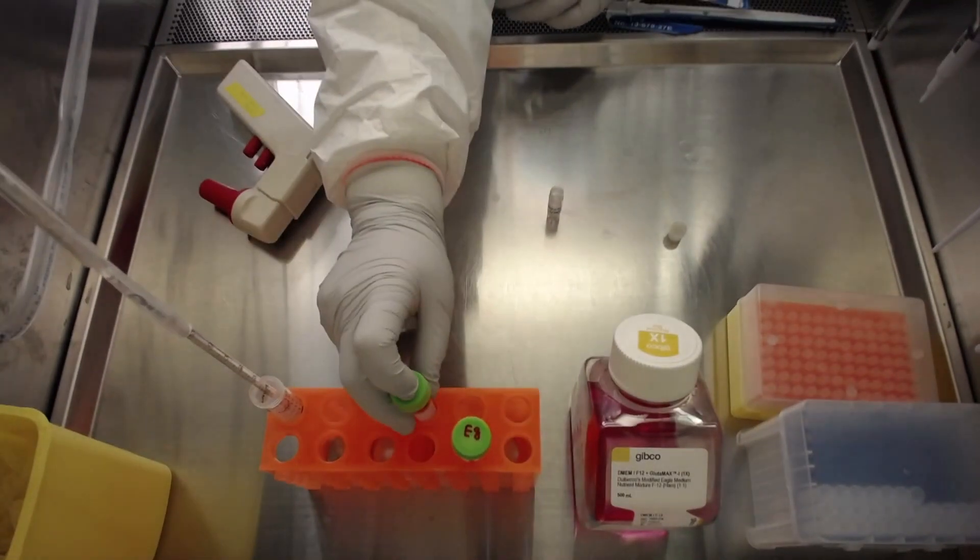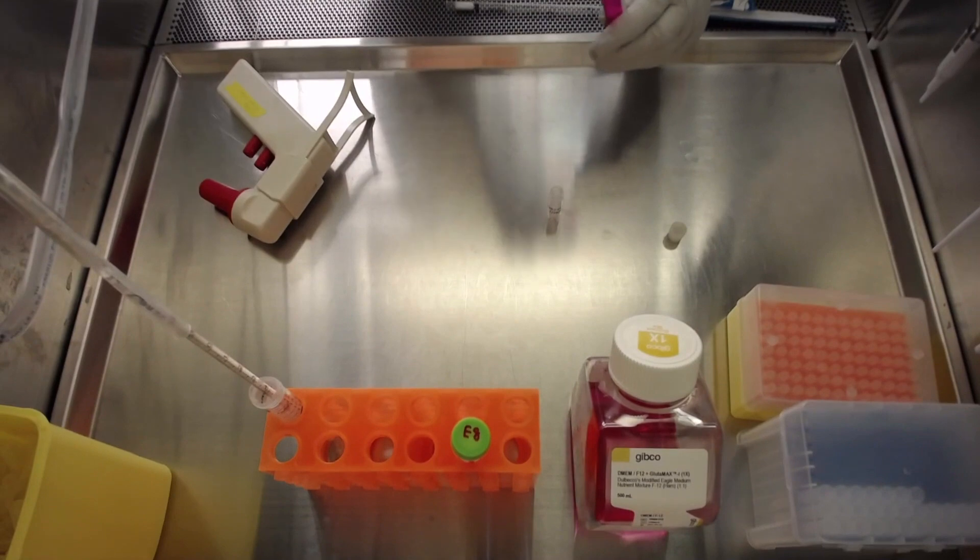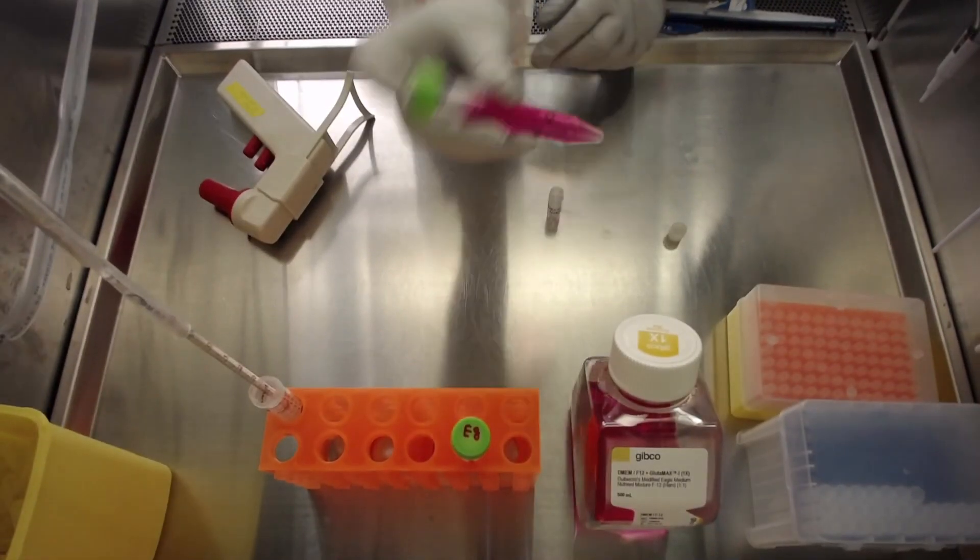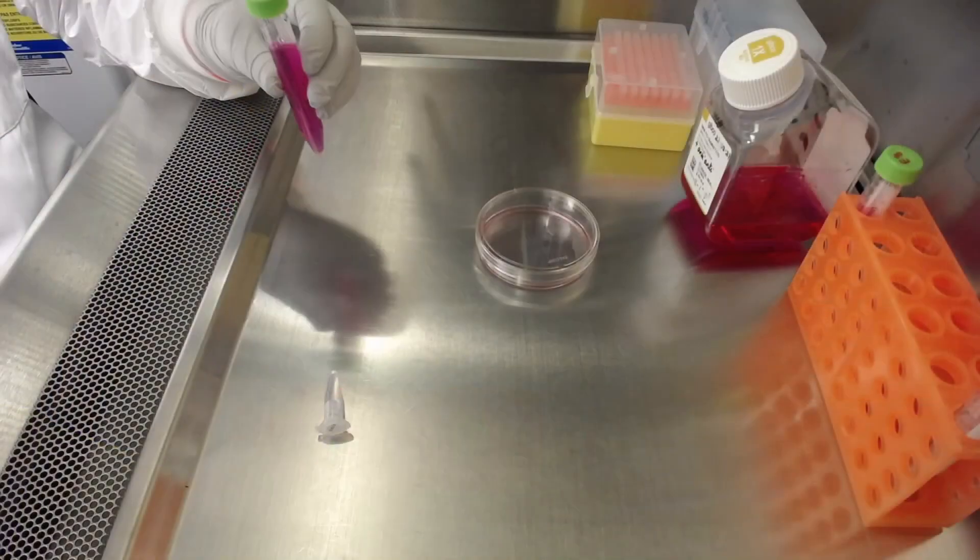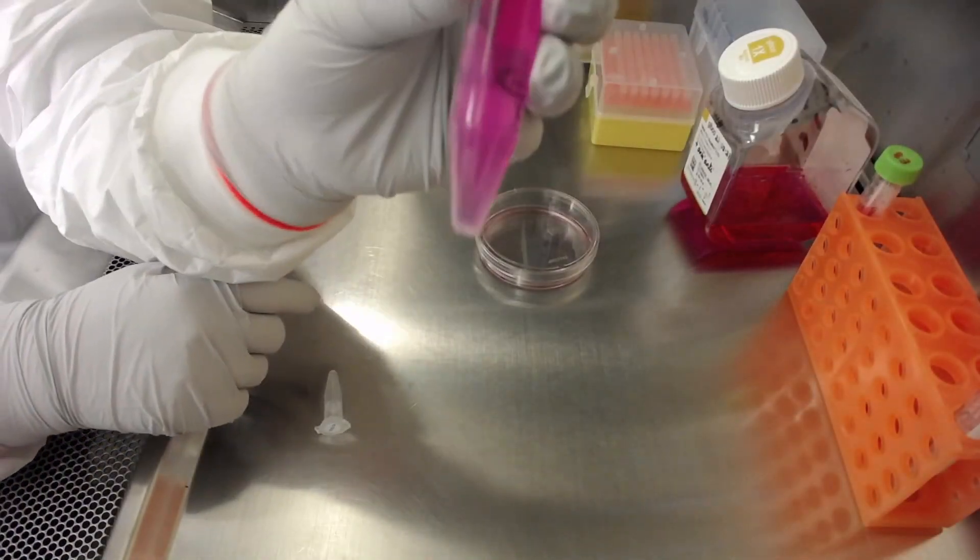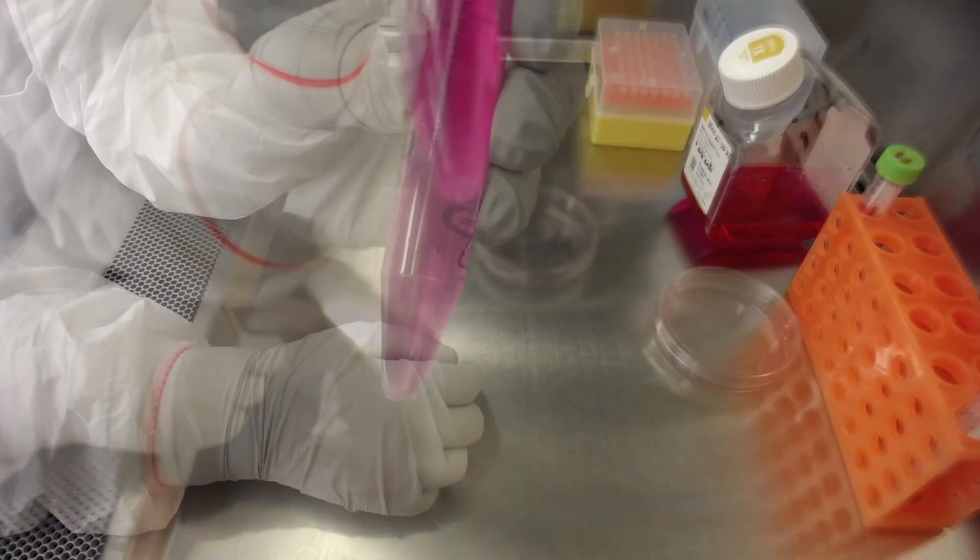Close the tube and gently homogenize the cell suspension by inverting the tube a few times. Centrifuge the cells for three minutes at 1200 rpm.